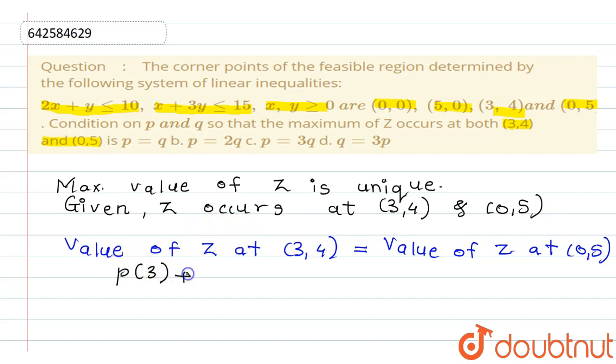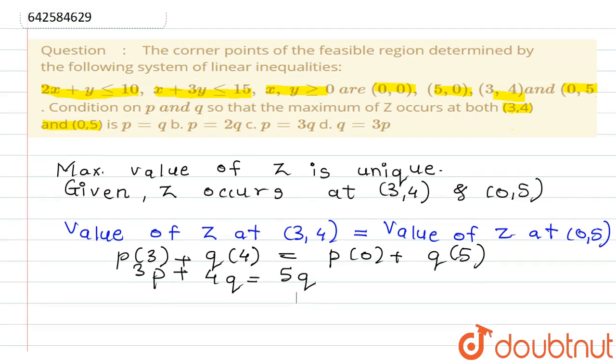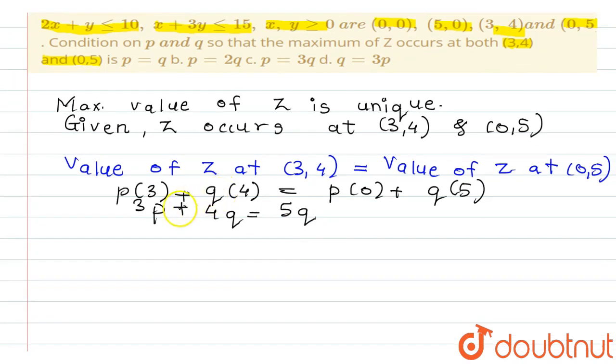P of 3 plus Q of 4 is equal to P of 0 plus Q of 5. So this becomes 3P plus 4Q is equal to 5Q. Yes friends? So solving this, we can get 3P is equal to Q.